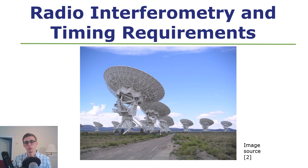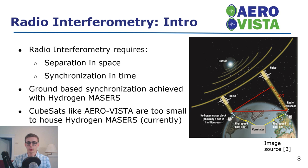To conduct radio interferometry, you require separation in space but synchronization in time. On the ground, this is used in a technique called Very Large Baseline Interferometry, or VLBI, using hydrogen masers as synchronization clock sources. This allows very high angular resolution measurements of sources such as quasars, or famously the Event Horizon Telescope black hole picture. CubeSats like Aero and Vista are too small to house hydrogen masers in their current form, but there are other high quality clock sources that we can use.